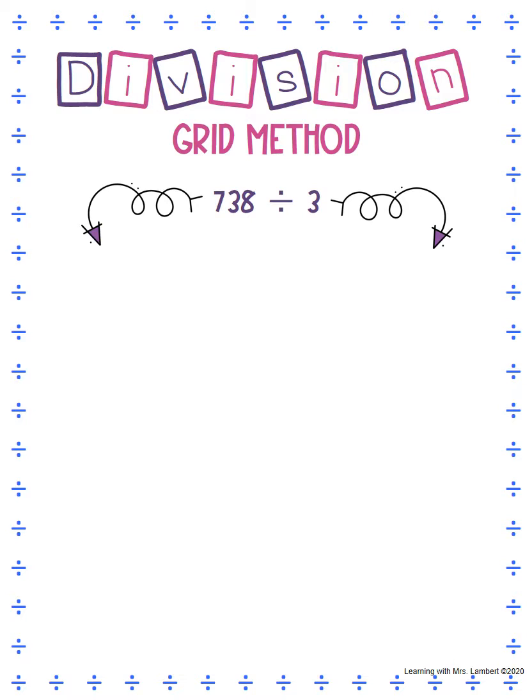The problem we're gonna do is 738 divided by 3. The first thing that's gonna help us work through this problem is look at our divisor, which is 3, and we want to list all the multiples of that number.